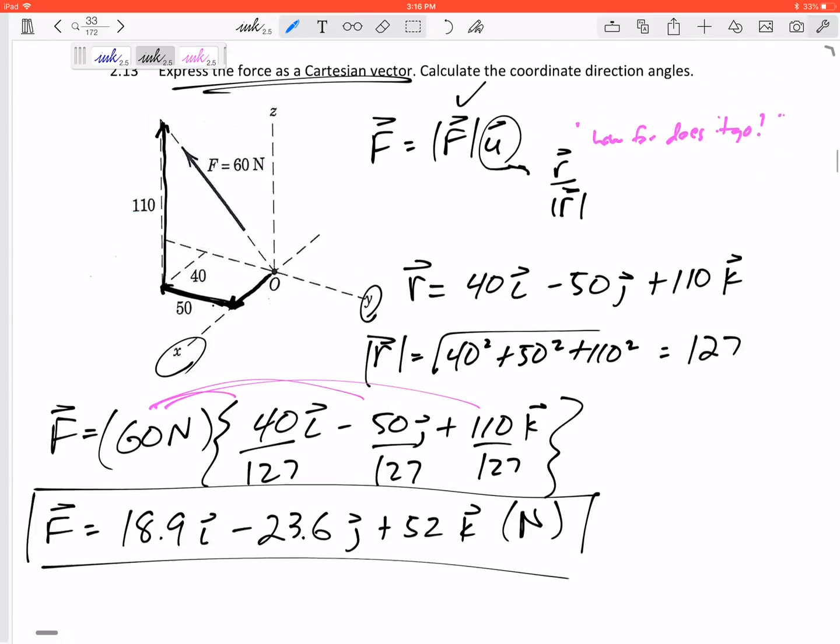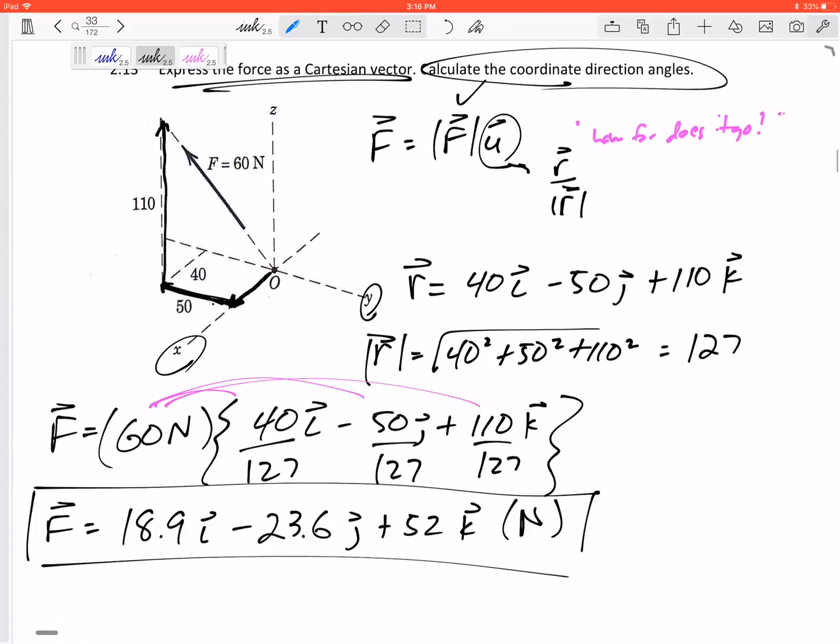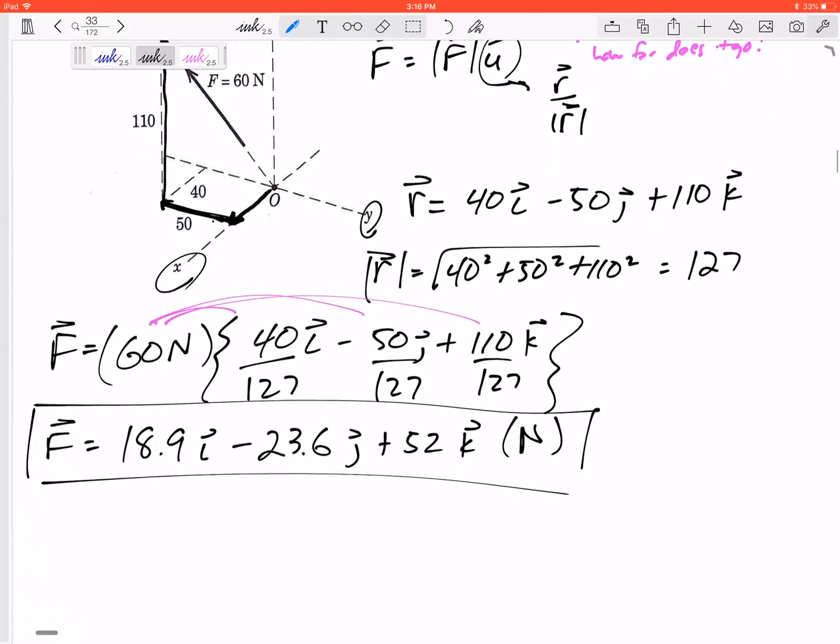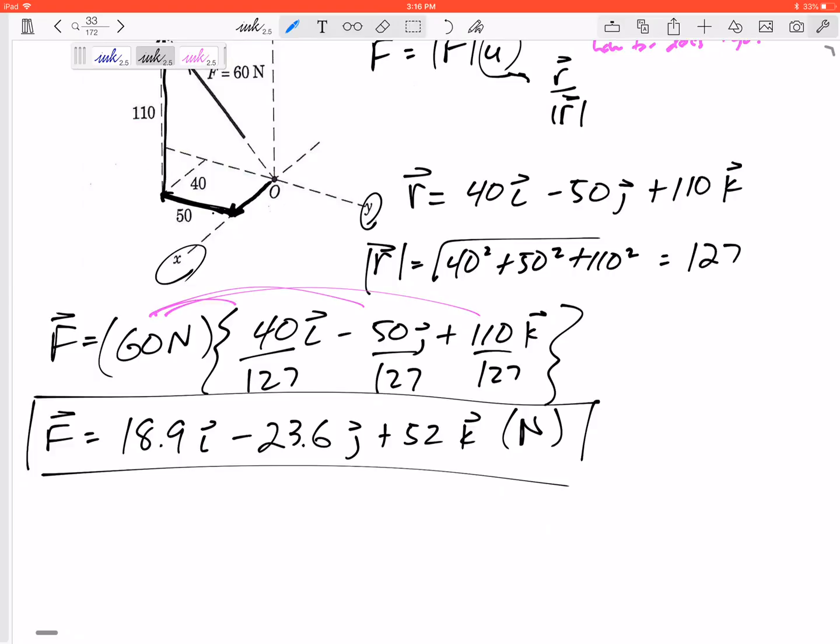So that is a major part of this problem, expressing the force as a Cartesian vector. Now I want to calculate the direction angles. So this has nothing to do with dimensions. If I'm given any vector and I want its coordinate direction angles, it's F equals F times U, where U for coordinate direction angles is cosine alpha I plus cosine beta J plus cosine gamma K.